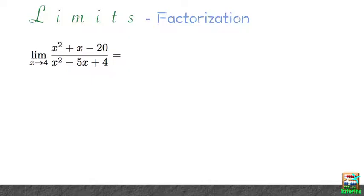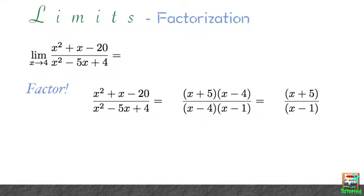Here we have a polynomial equation divided by another polynomial equation, and we want to find the limit of the rational function as x approaches 4. It is important to remember that if an equation like this can be factored, then factor it.